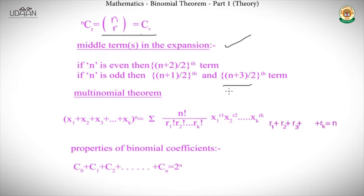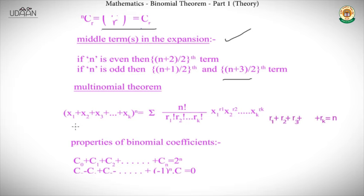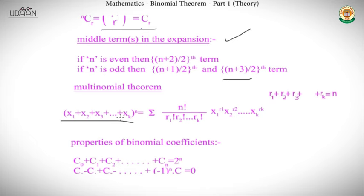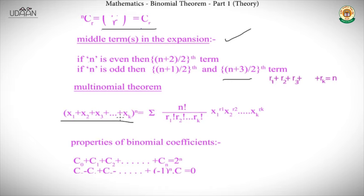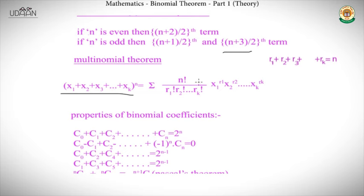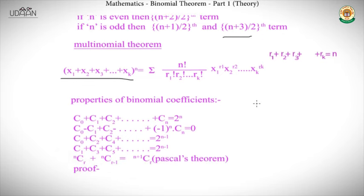We can generalize the binomial theorem to the multinomial theorem. For x₁, x₂, ..., xk raised to the power n, similar combinatorial arguments show it equals the sum of n! / (r1! · r2! · ... · rk!) · x₁^r1 · x₂^r2 · ... · xk^rk. Setting k = 2 recovers the standard binomial theorem as a special case.